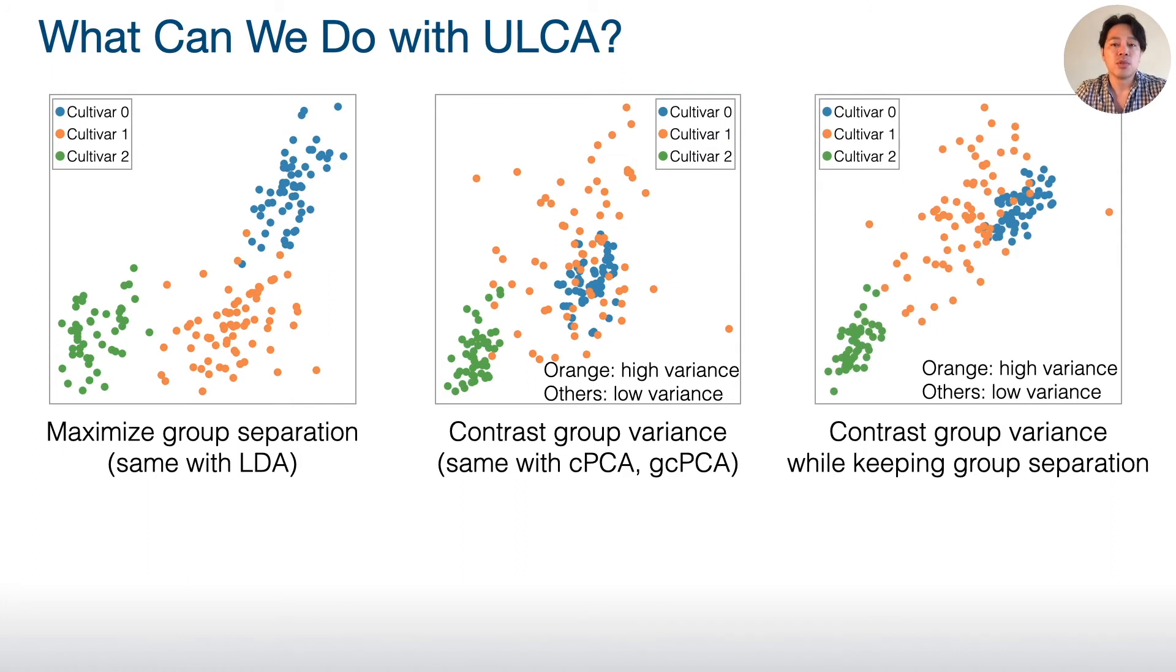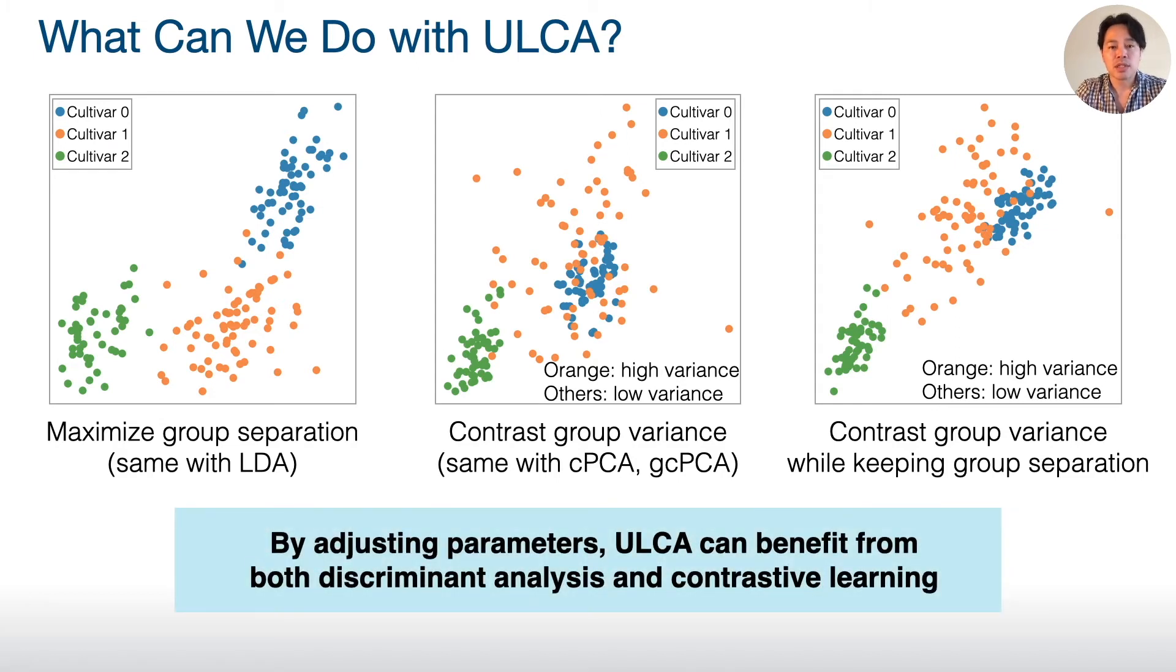Furthermore, for example, ULCA can produce reasonable group separation and higher variance for a certain group than the others. By adjusting parameters, ULCA can benefit from both discriminant analysis and contrastive learning.